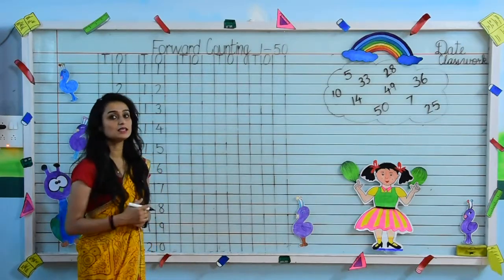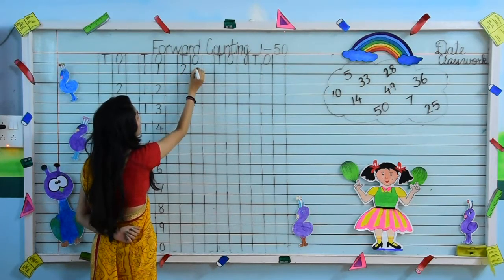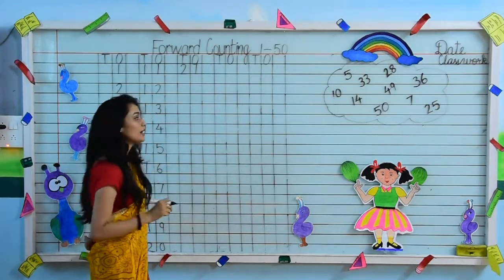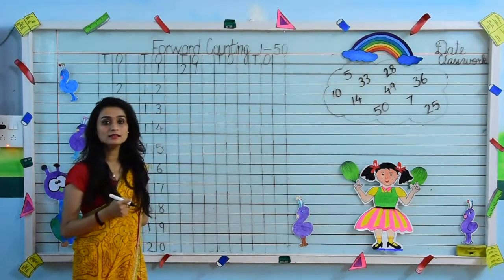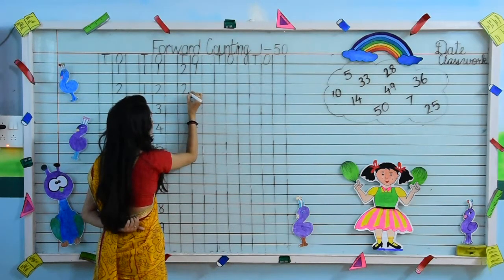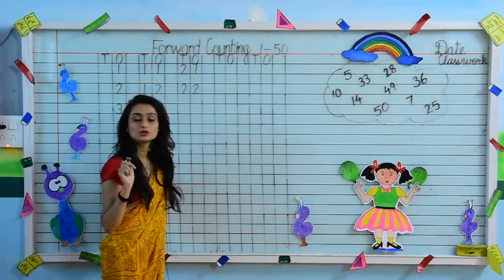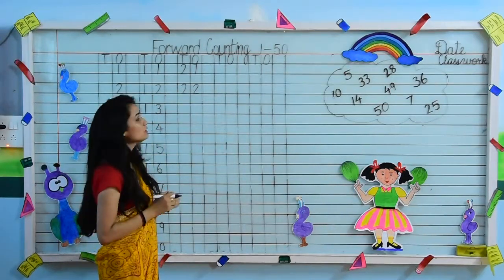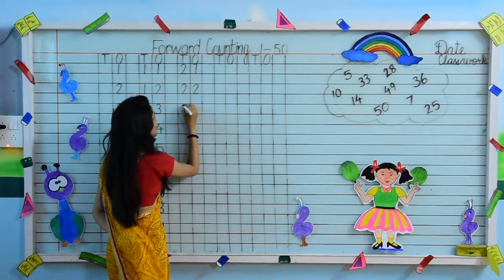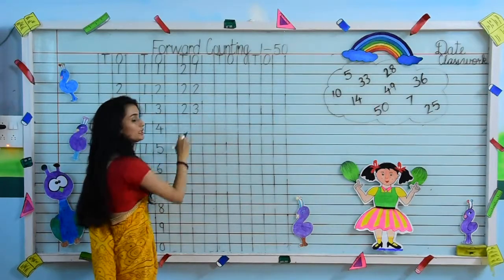Come on the next line. Our next line starts with 2, 1 — 21. What comes after 21? Our next number is 2, 2 — 22. What comes after 22? After 2, 3 is the next number. So we will write 2, 3 — 23.